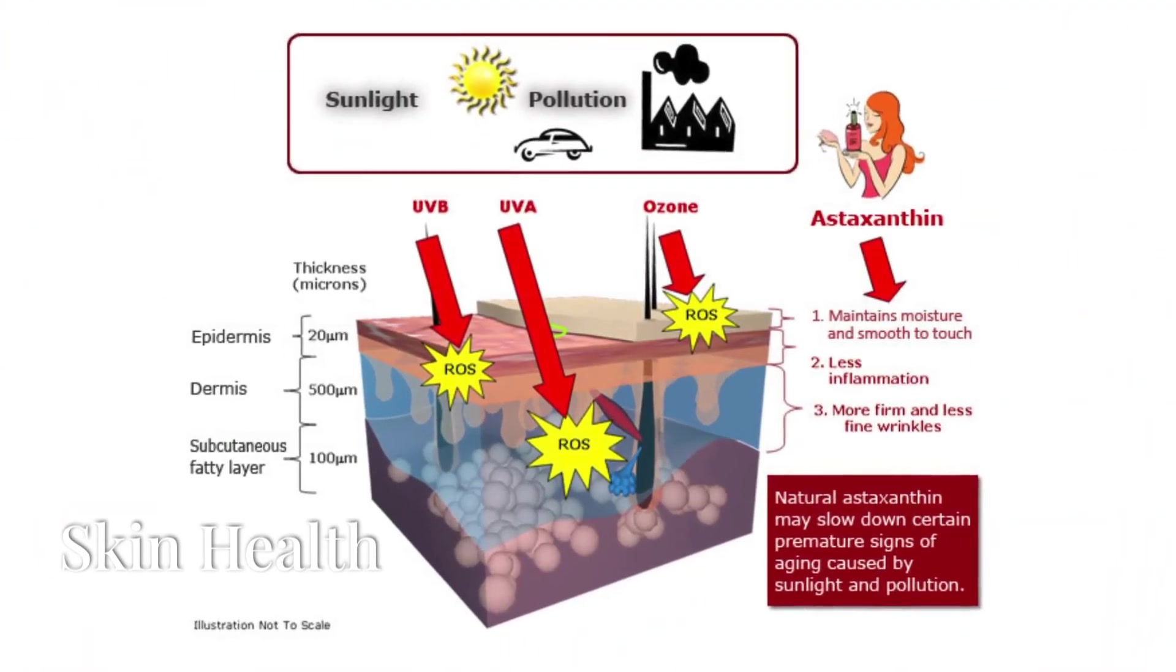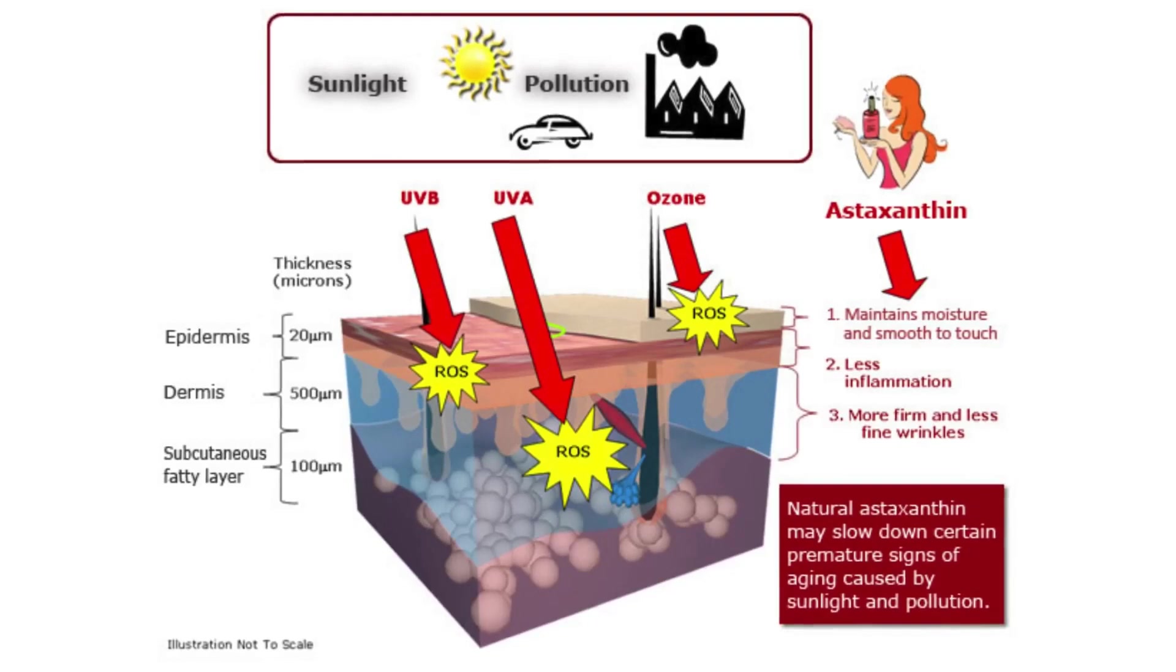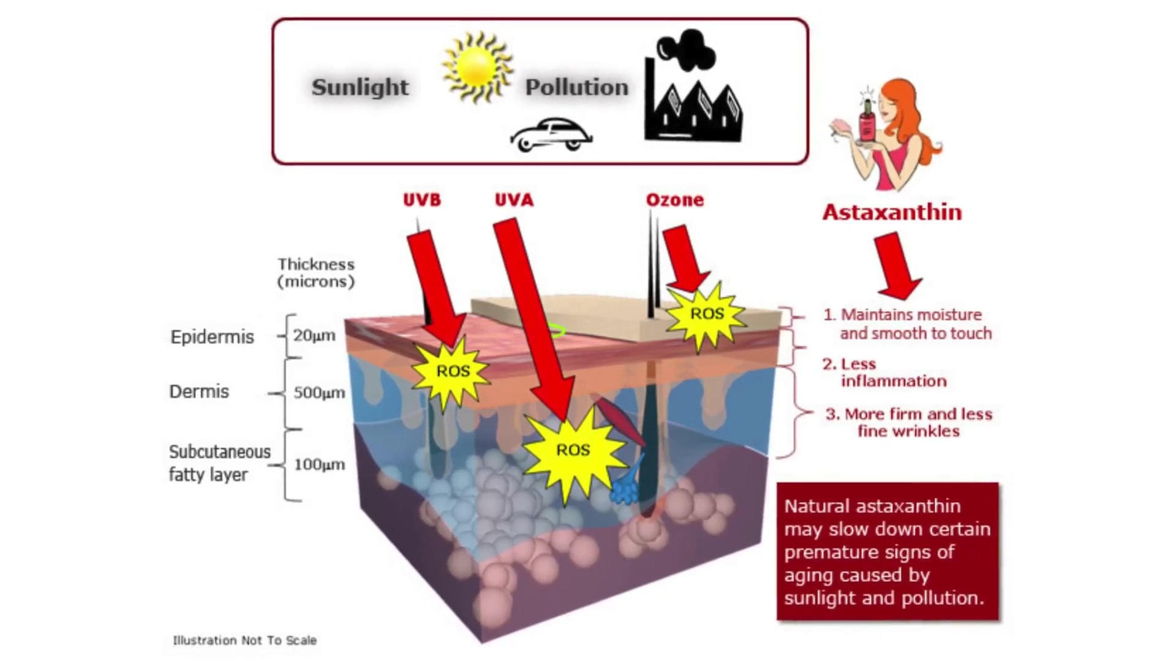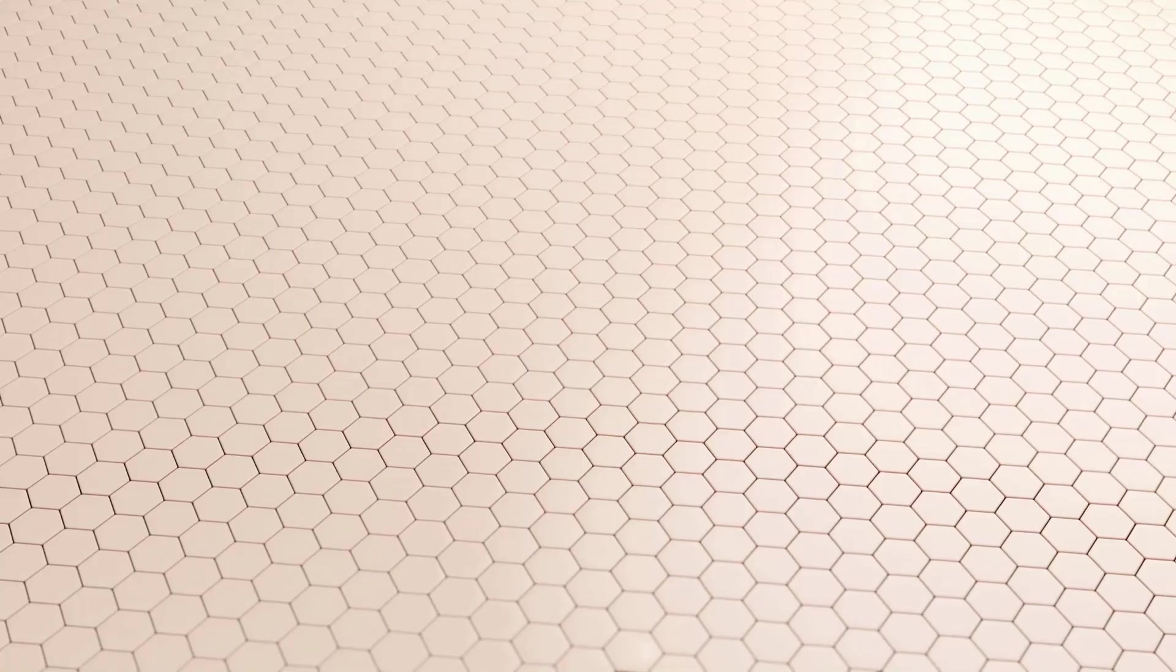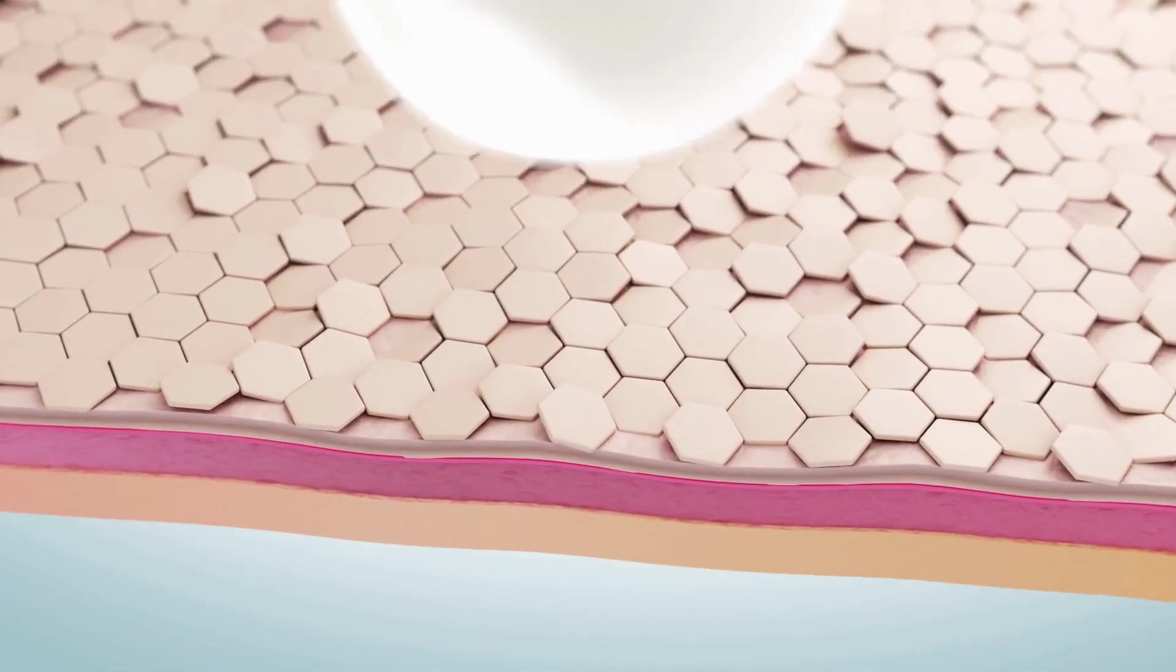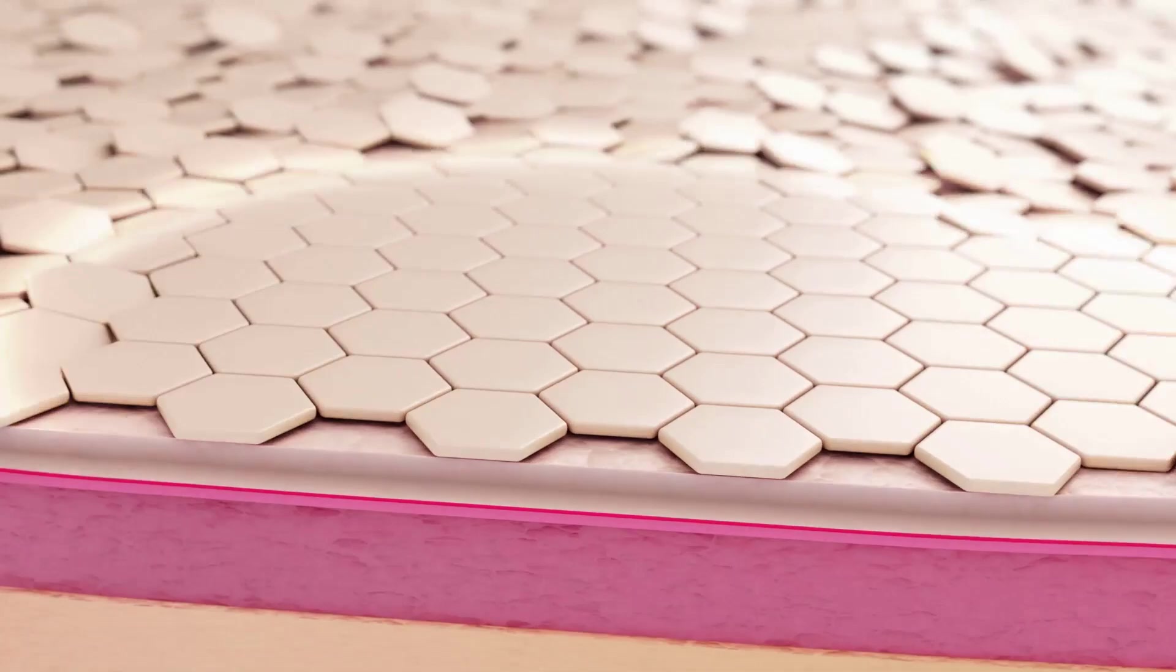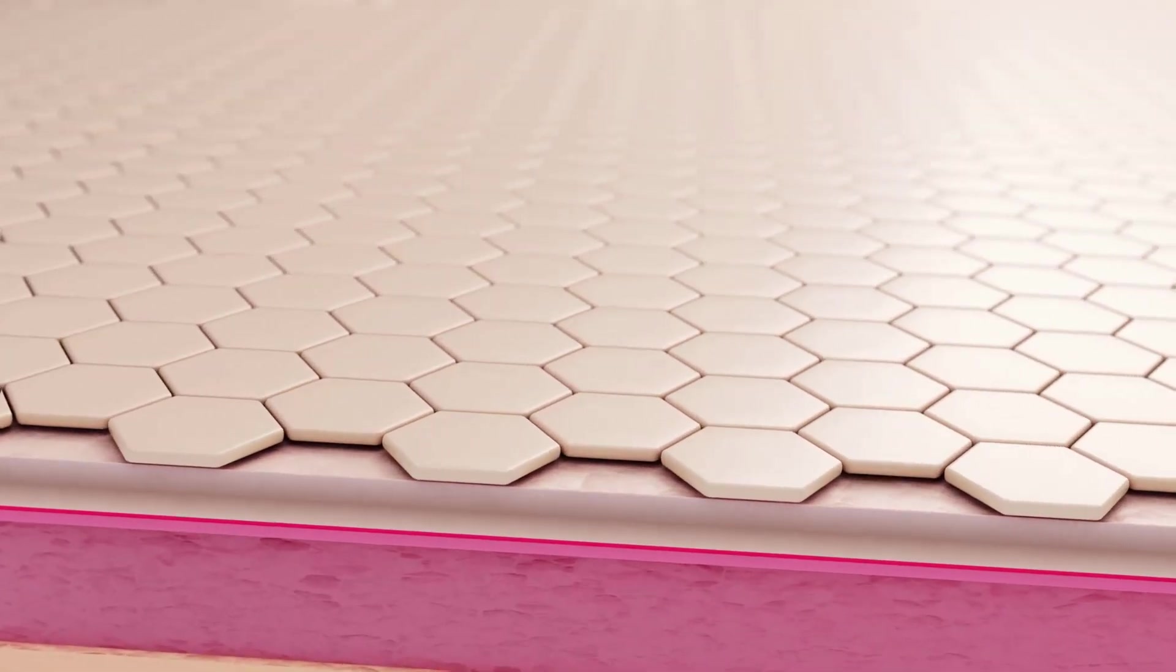Astaxanthin is a powerhouse for skin health. It improves skin elasticity, reduces wrinkles, and protects against UV-induced damage. By scavenging free radicals generated by UV exposure, astaxanthin protects skin cells, prevents collagen breakdown, and supports the skin's natural barrier function. This leads to healthier, more youthful looking skin.